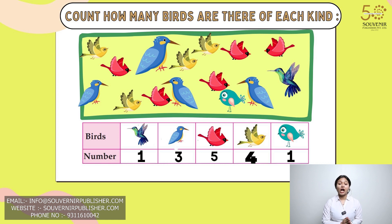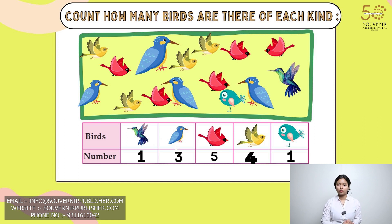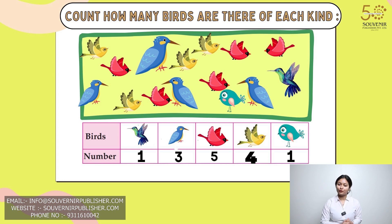Now let's see how many red birds there are — you have to count. Now you have to count how many yellow birds there are — there are four such birds. Now you have to count how many small blue birds there are. Correct students, that is one.